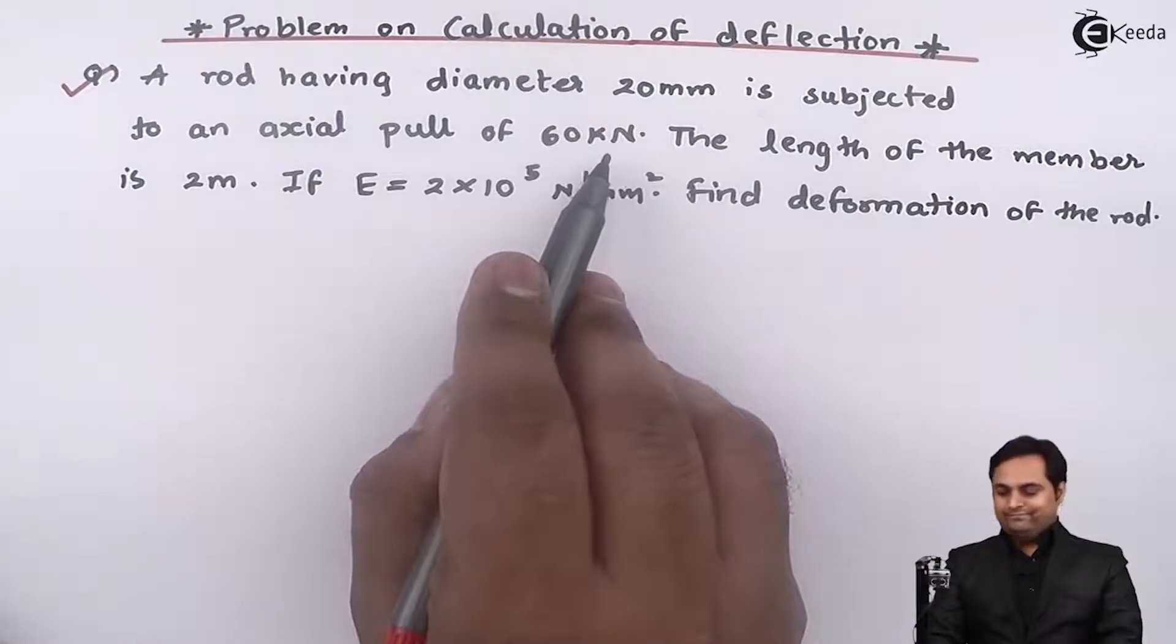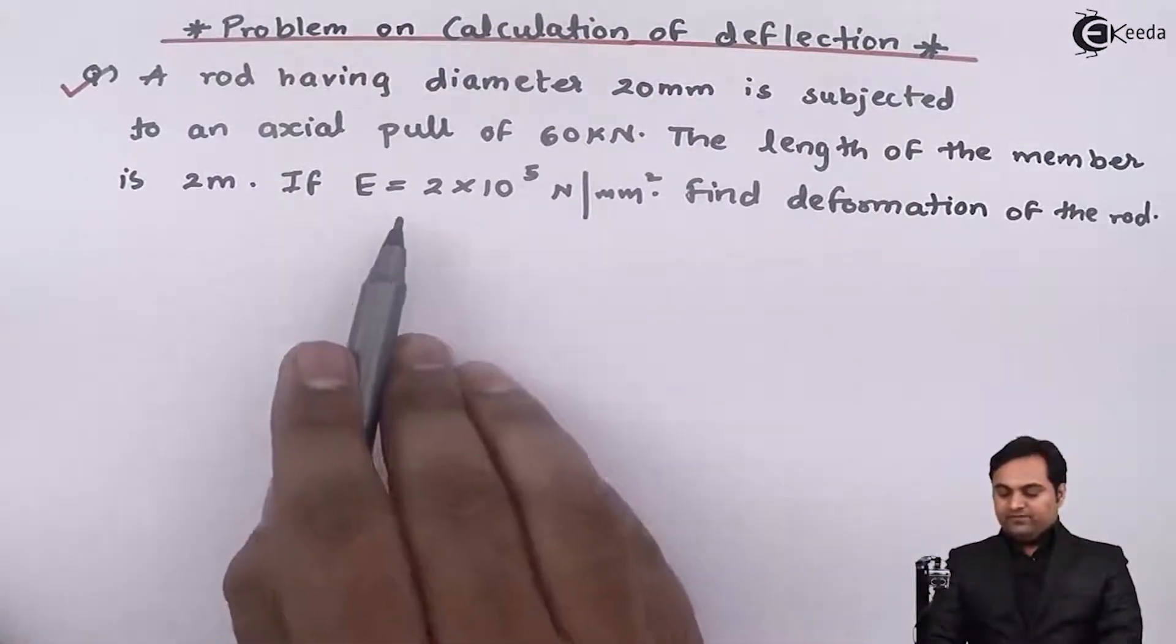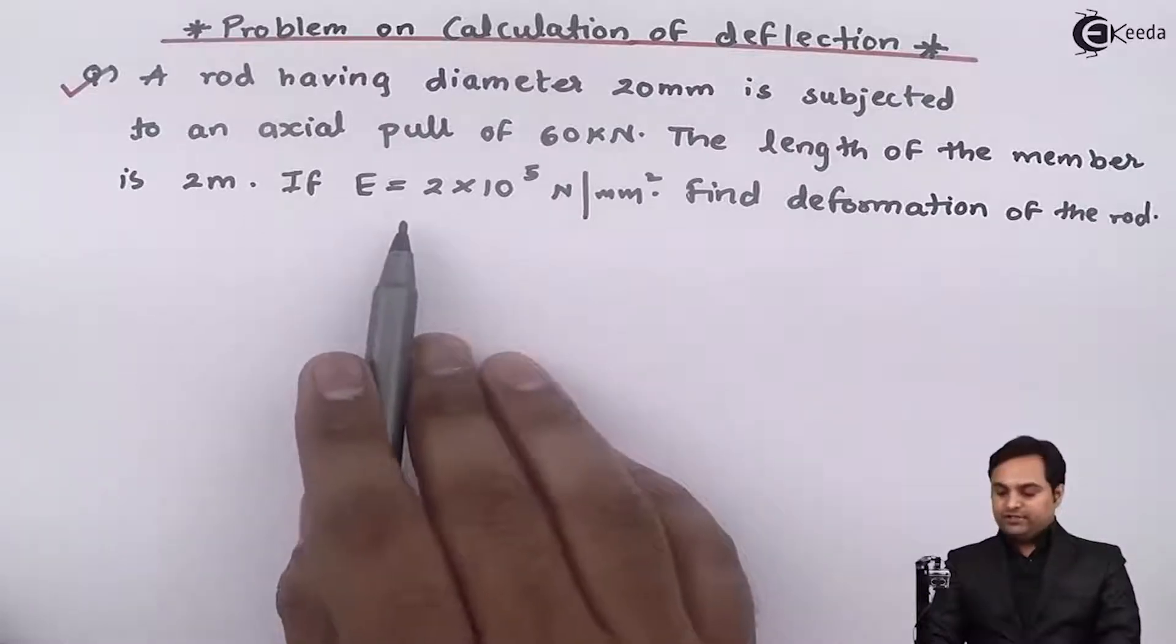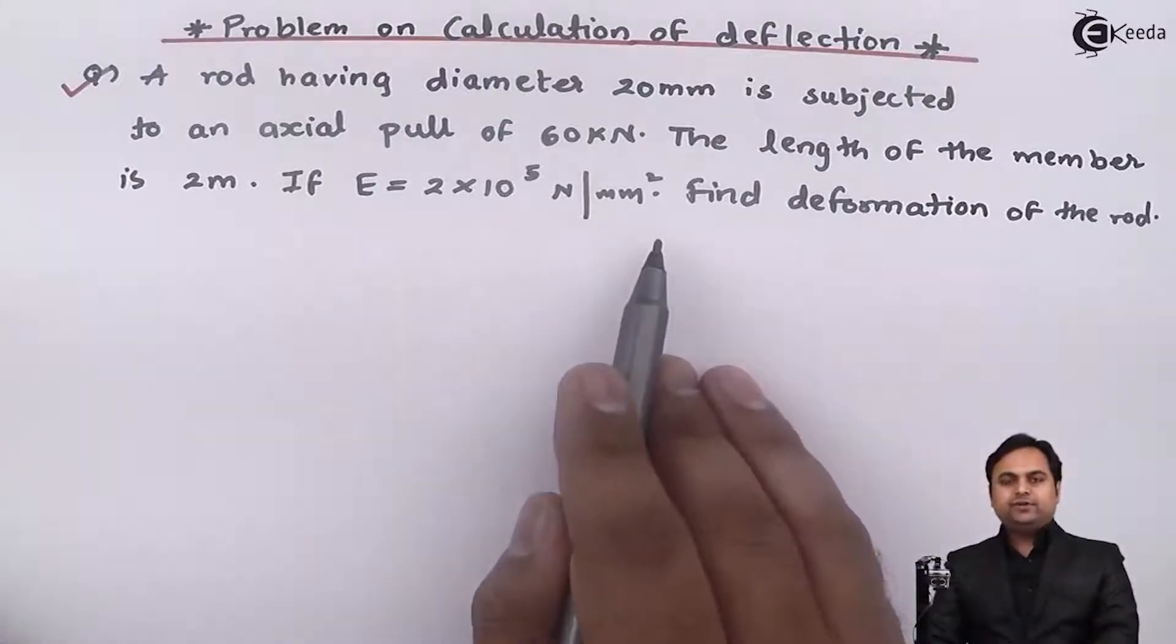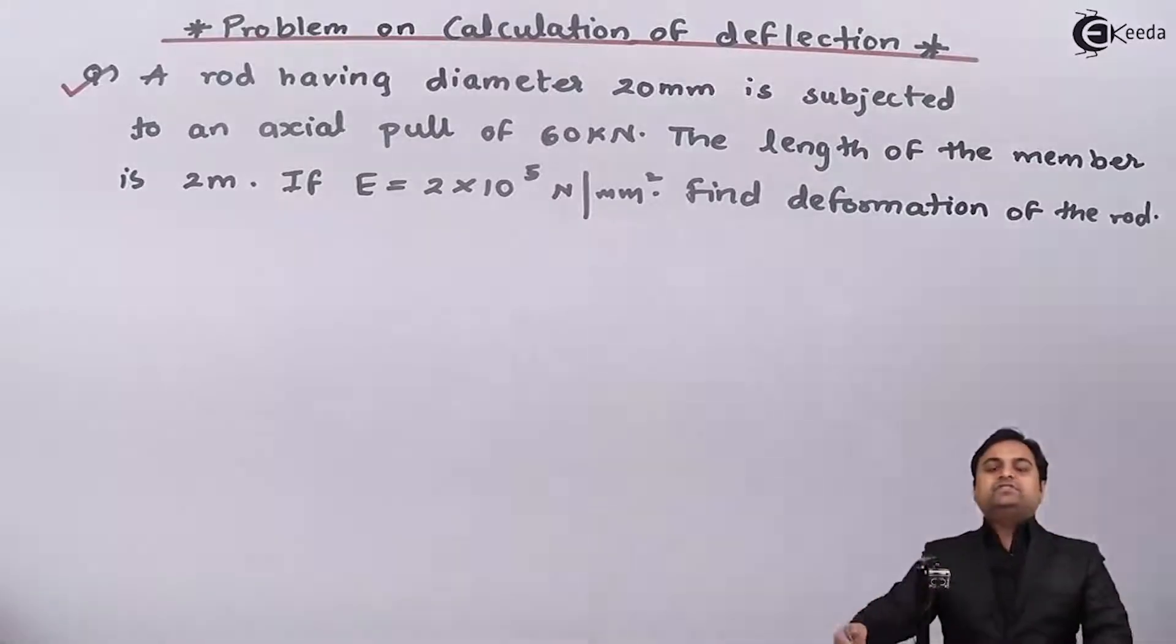The length of the member is 2 meters. If capital E, that is Young's modulus, is 2 into 10 raise to 5 Newton per mm square, find the deformation of the rod. Now this is the question.